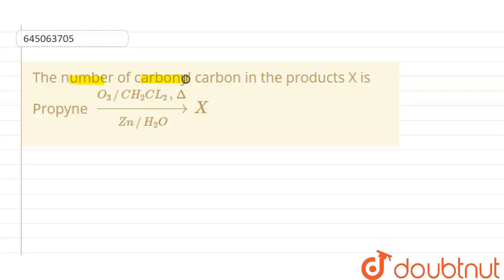The number of carbonyl carbon in the product X is? So this is propyne and it is being treated with ozone in CH2Cl2, it is heated, and later it undergoes zinc hydrolysis, then we'll be getting our X product.